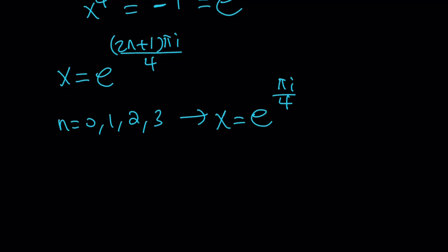The first root is going to be e^(πi/4). And then, because if you replace n with 0, that's what you're going to get. And this is going to be √2/2 + √2/2 i. If you do n = 1, x = e^(3πi/4). And then e^(5πi/4).